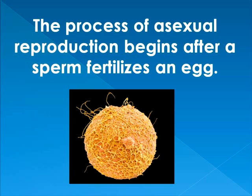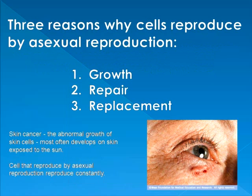The process of asexual reproduction begins after the sperm fertilizes the egg — it happens straight away. This process of asexual reproduction is called mitosis. There are three reasons why cells reproduce asexually by mitotic division: growth, turning a little animal such as an elephant into a big animal; repair or replacement; and abnormal growth, such as skin cancer, where cells don't stop growing and continue to divide by mitosis.